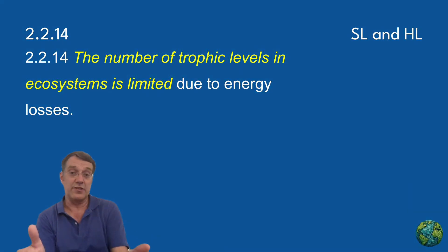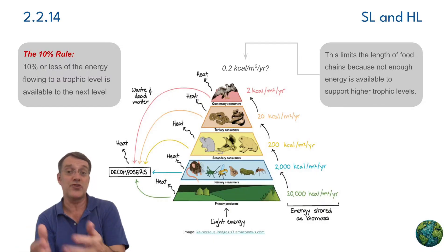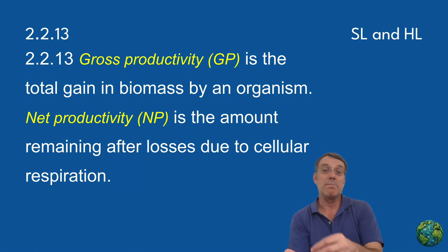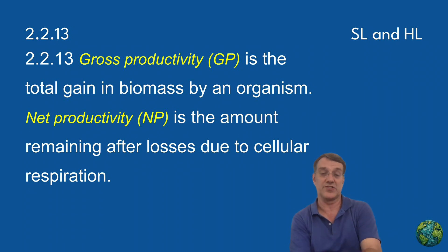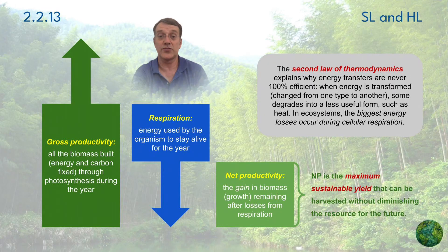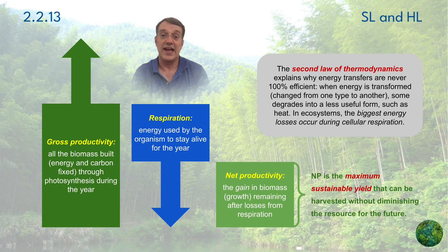These energy losses explain why food chains typically only have three or four trophic levels. When we measure productivity in ecosystems, we're really looking at two key metrics: gross productivity and net productivity.